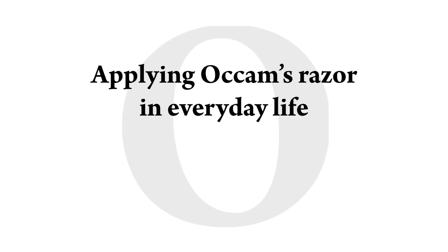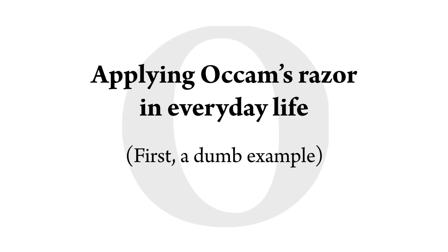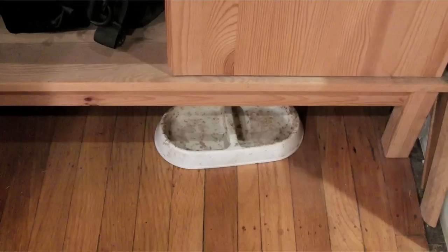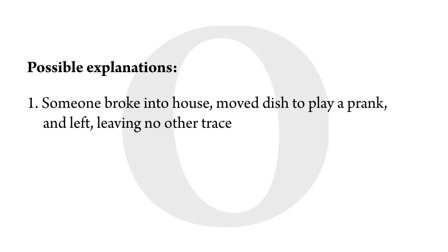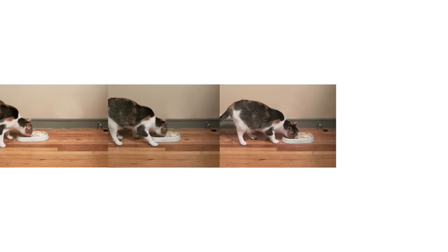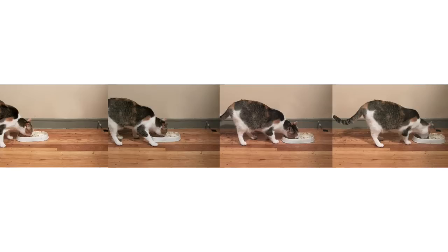Occam's Razor can be applied in everyday life. Say you come home and find that your cat's dish isn't where it usually is — it's ten feet away under a cabinet. How did it get there? One idea is that someone broke into your house and moved it to play a prank on you. But you've seen your cat licking the bowl and moving it around, so maybe the cat licked the bowl across the room.